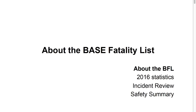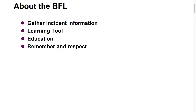First of all, I want to make sure everybody really knows a little bit about the BASE fatality list — the context in which we're coming from. The context of the BASE fatality list is to gather incident information and facts about what happened for individual incidents. We're not trying to do anything but help learn from these incidents and learn from the mistakes. We're also trying to have a way to educate everyone about the things that are happening, and to see patterns in the incidents we may be seeing so we can try to circumvent those specific patterns. And of course we're trying to remember and respect our fallen friends.